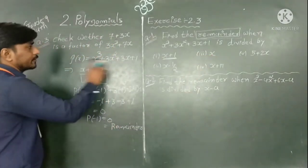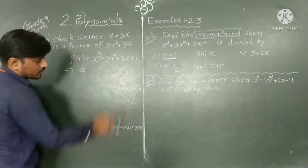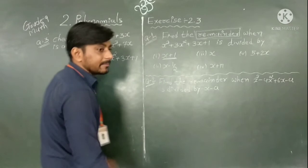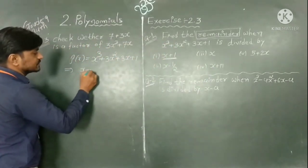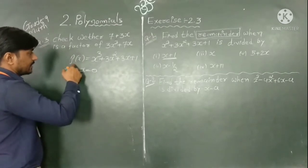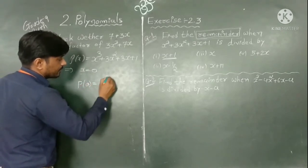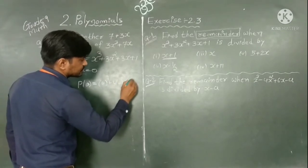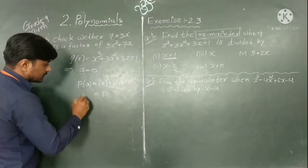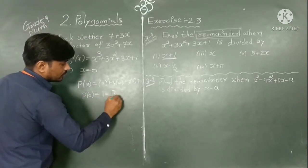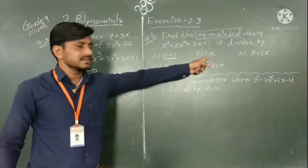Now for the second sub-part, the polynomial is the same. By the Remainder Theorem, take the divisor x equal to 0. So I put x equal to 0 in the polynomial. P(0) equals 0³ plus 3(0)² plus 3(0) plus 1. This is 0, this is 0, this is 0, and we have 1. So our remainder is equal to 1 when the divisor is x.